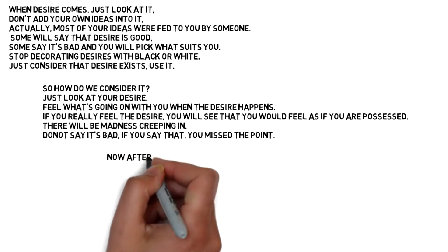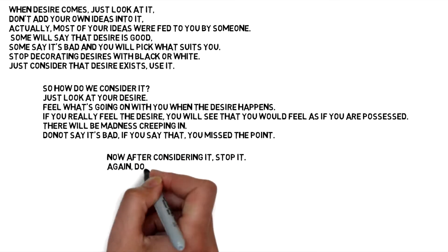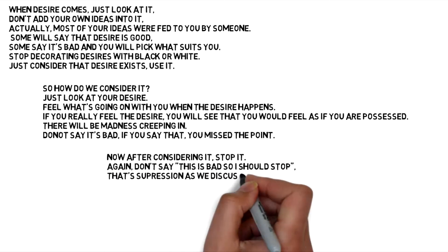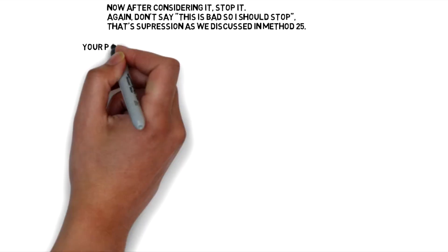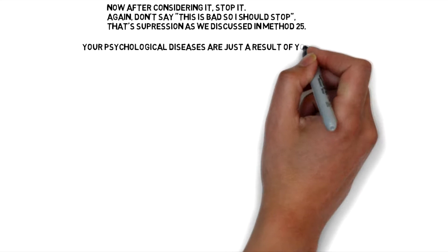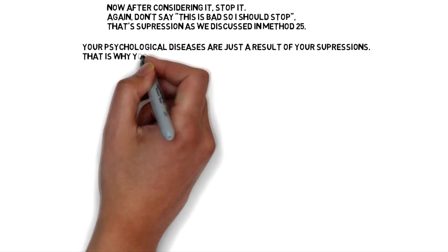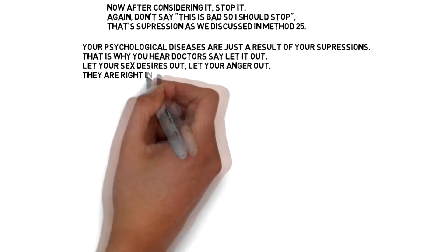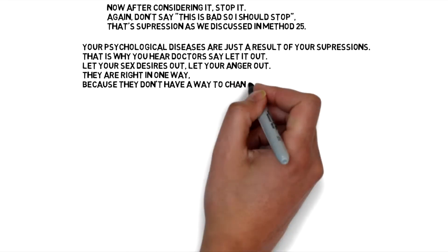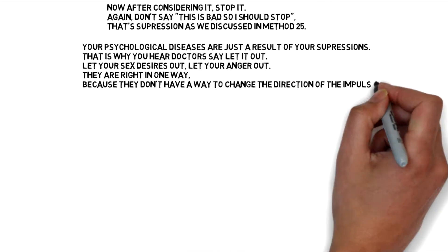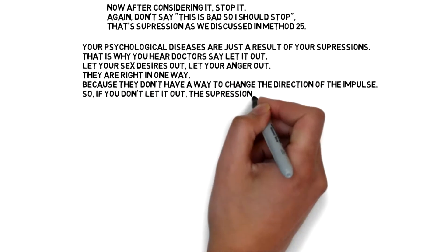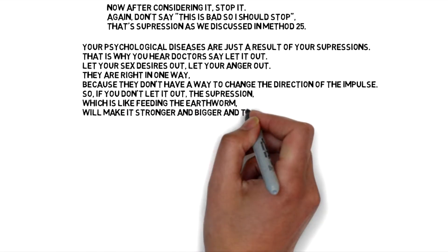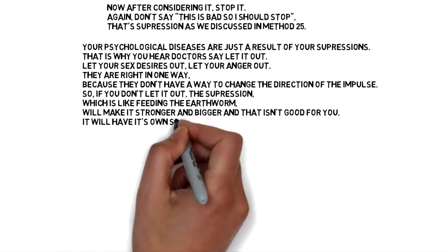After considering it, stop. Don't say this is bad so I should stop — that's suppression, as discussed in Method 25. Your psychological diseases are just a result of your suppressions. That is why you hear doctors say: let it out, let your sex desires out, let your anger out. They're right in one way, because they don't have a way to change the direction of the impulse. If you don't let it out, the suppression — which is like feeding the earthworm — will make it stronger and bigger, and that isn't good for you. It will have its own side effects, even as physical diseases.